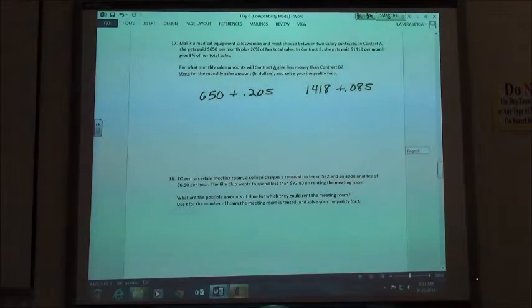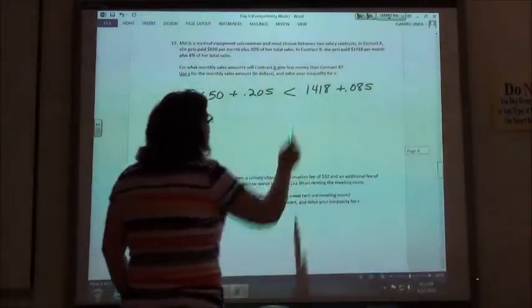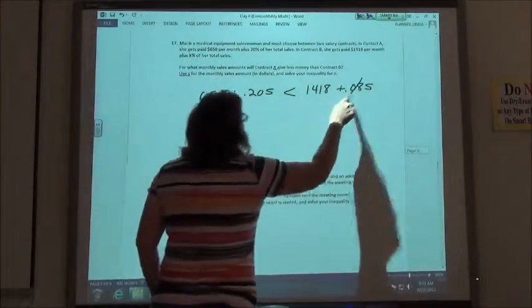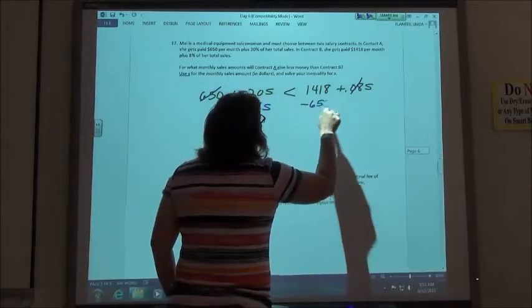For what monthly sales amount will A give less than contract B? So I want A to be less than B this time, and I have to go ahead and solve this. So I'm going to subtract my 8% S and subtract my 650.